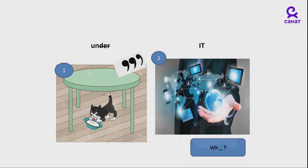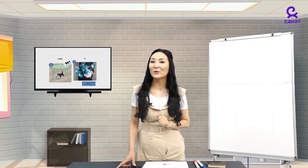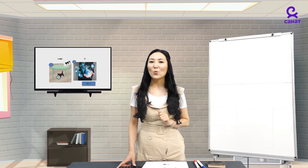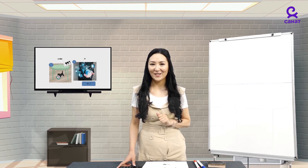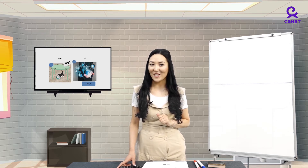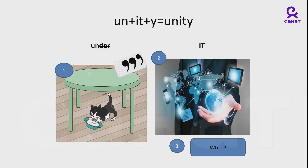And what about these letters? It looks like something is missing. We usually ask this question to know the reason. Which word is it? Correct, 'why'. And the missing letter is Y. So, what do we have now?